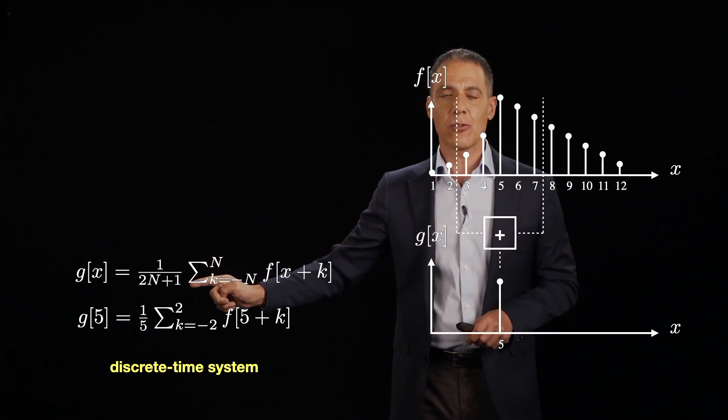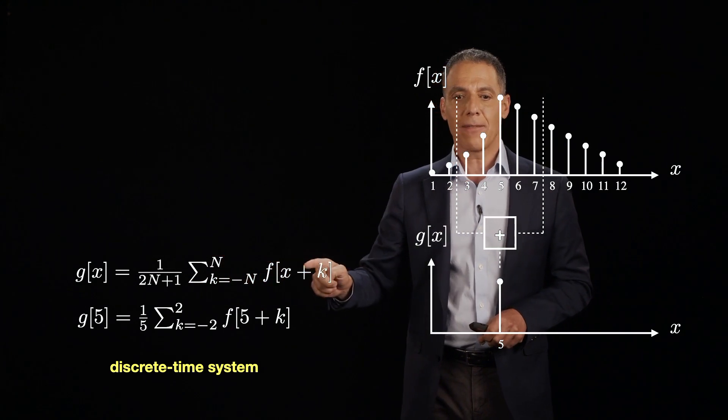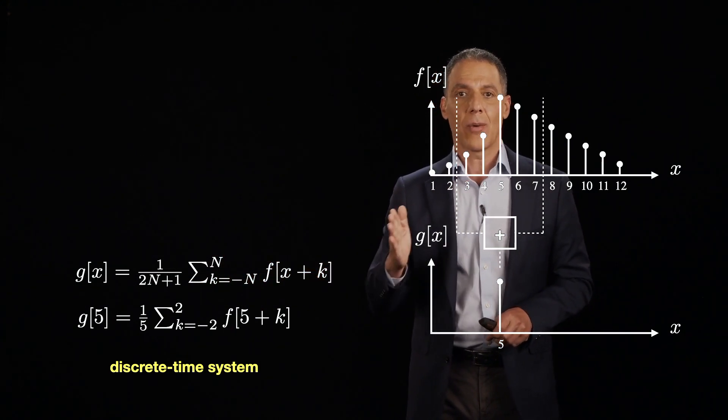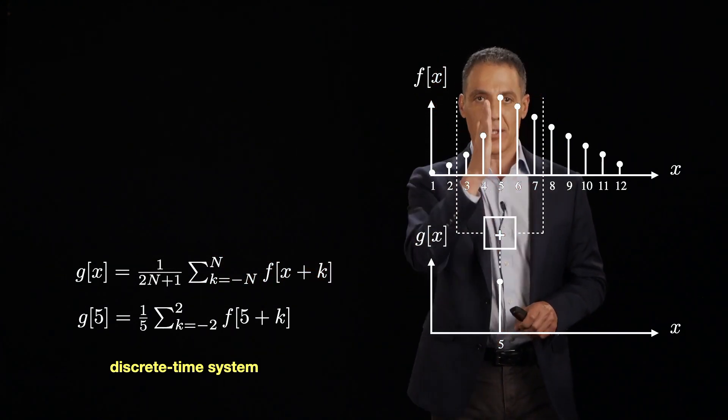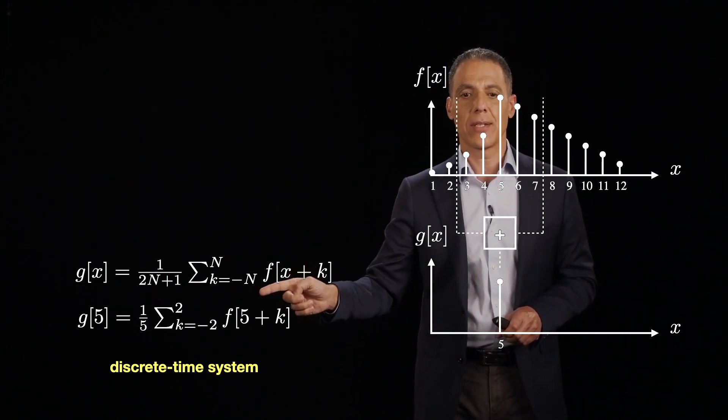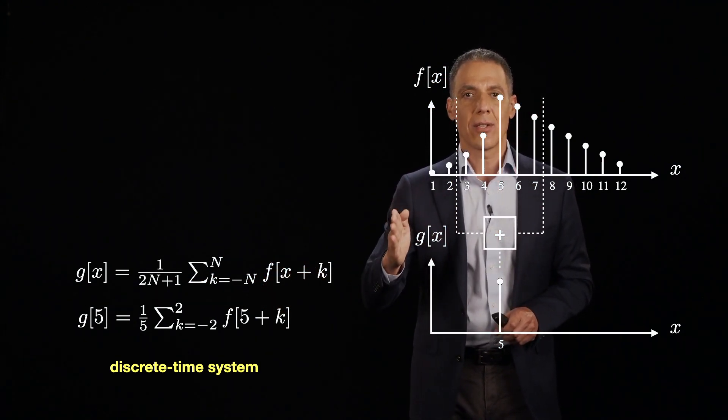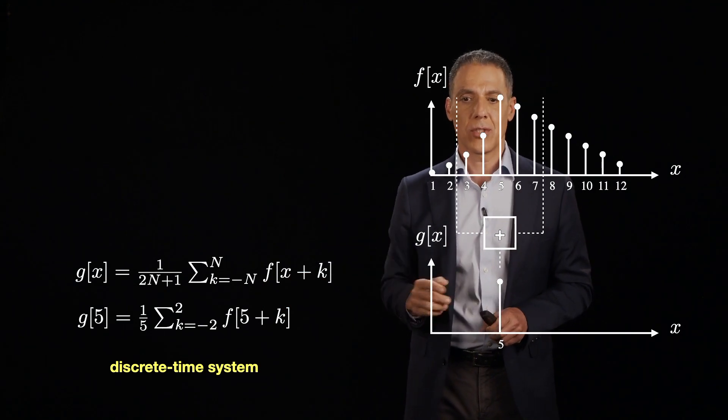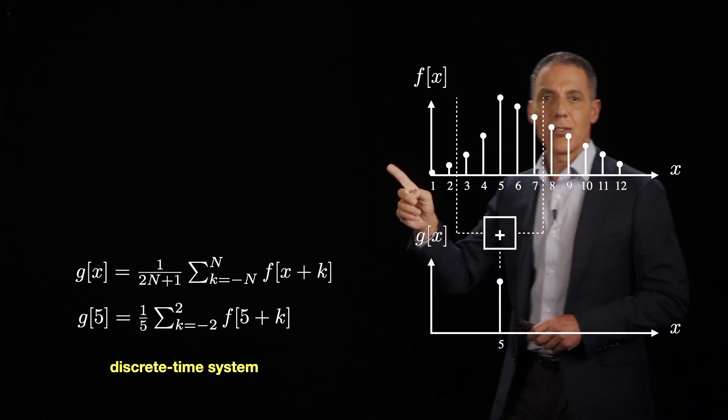So it's the sum from k equals minus n to n of f of x plus k. So I go two to the left, one to the left, and then I take f sub k, f sub x rather, when k is zero. And then to the right, to the right, plus one, plus two.